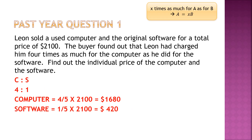Past paper question 1: Leon sold a computer and software for a total of $2,100. The buyer found Leon charged four times as much for the computer as for the software. Computer to software ratio is 4 to 1, giving 5 total parts. The computer costs 4 out of 5 times $2,100, and the software costs 1 out of 5 times $2,100.